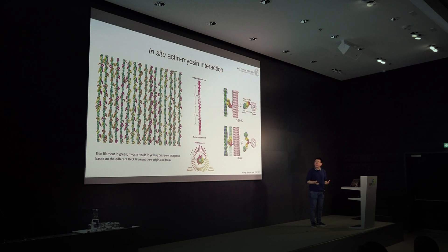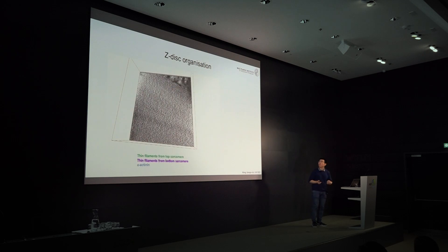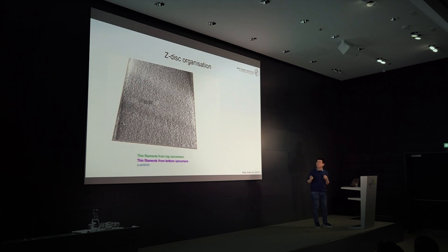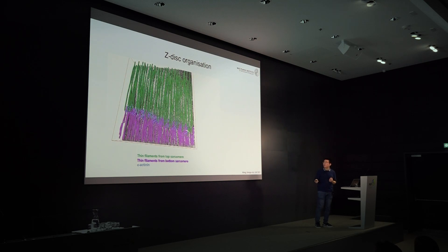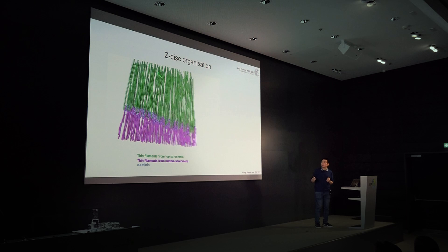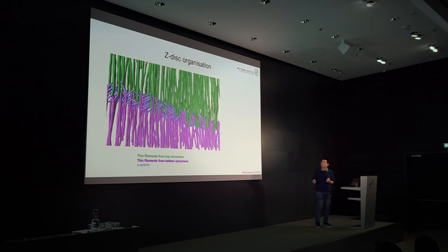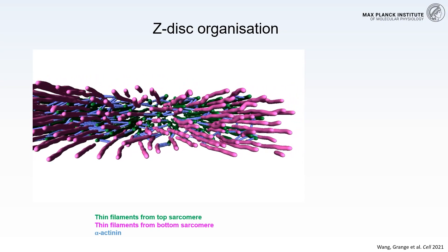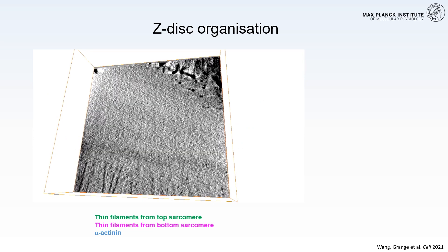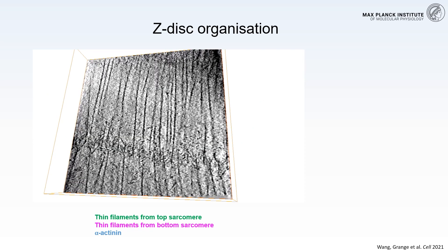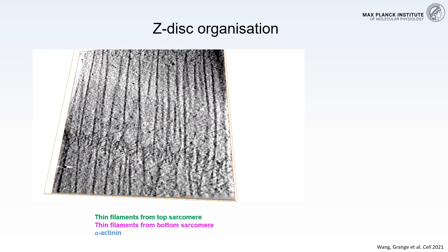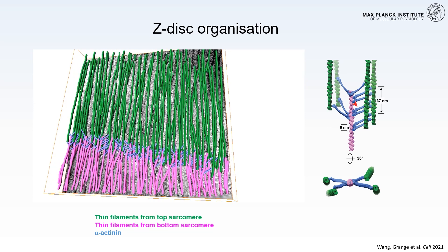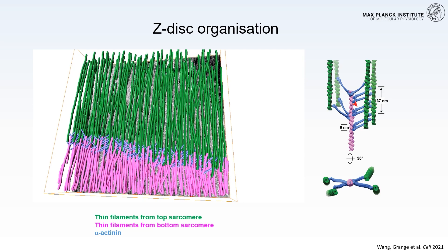We can explore beyond actin and myosin, looking at other regions of the sarcomere such as the Z-disc, which is the boundary of the sarcomere. Here you find thin filaments from the upper and lower sarcomere, cross-linked by a meshwork formed by a protein called alpha-actinin. To our surprise, this meshwork is quite irregular. Alpha-actinins cross-link thin filaments at variable spacings, with the most preferred configuration being a doublet spaced about six nanometers apart, suggesting they also bind to adjacent actin subunits.